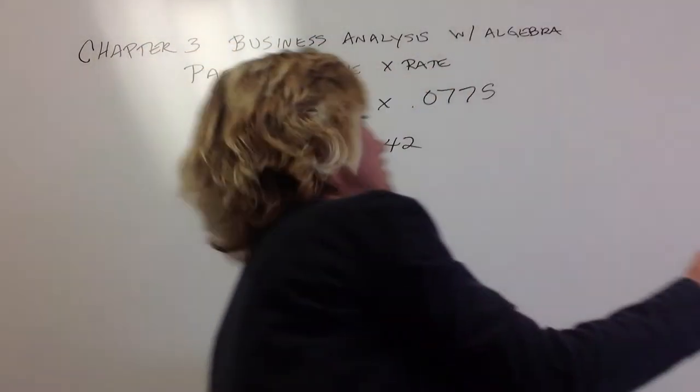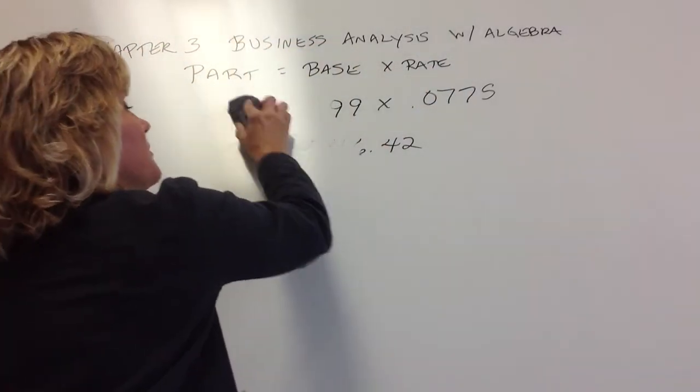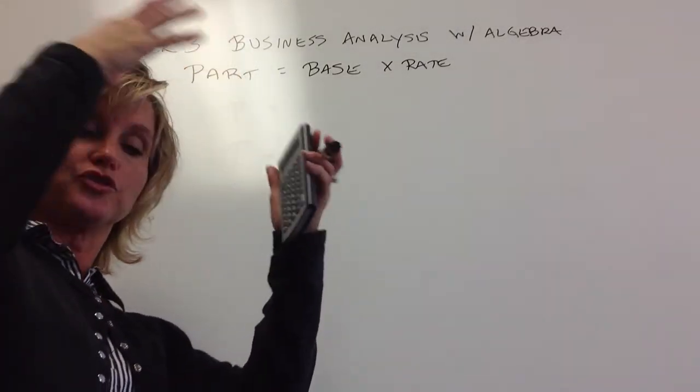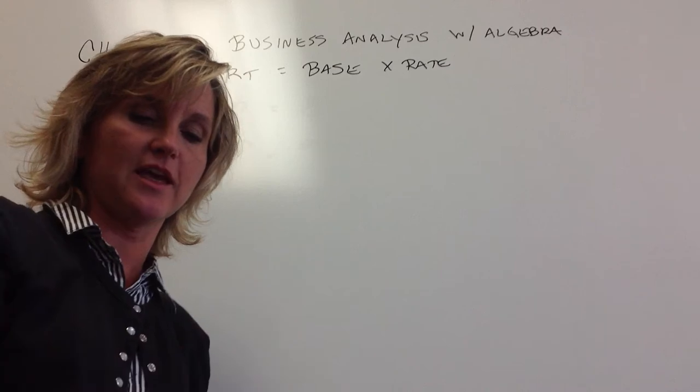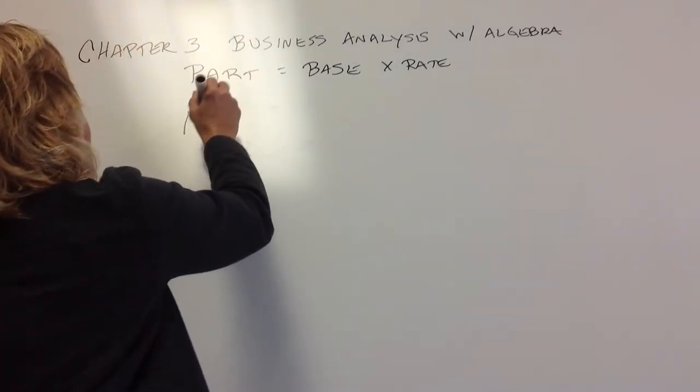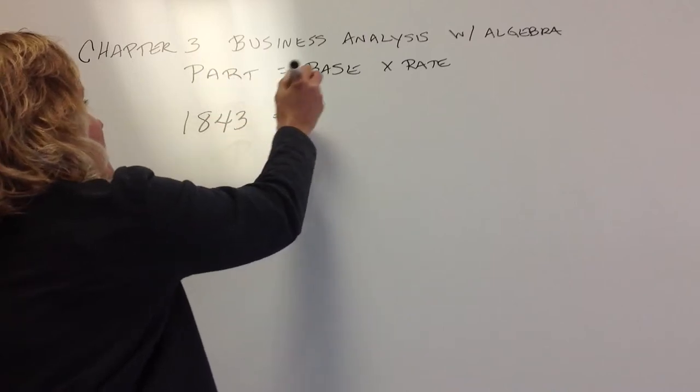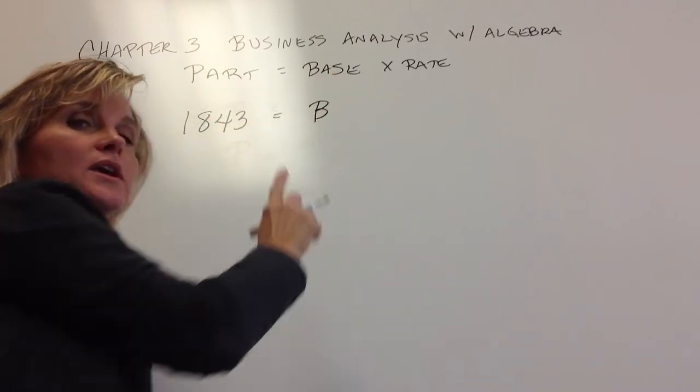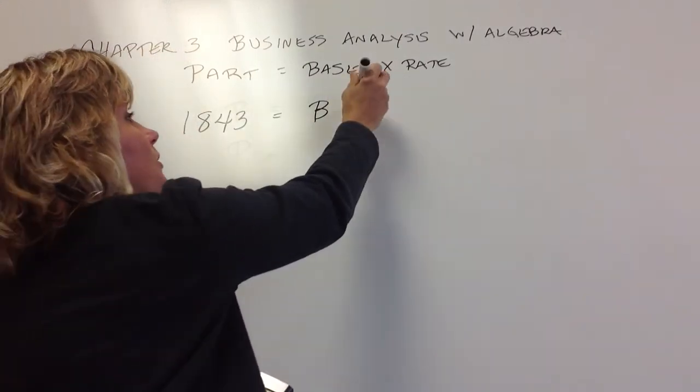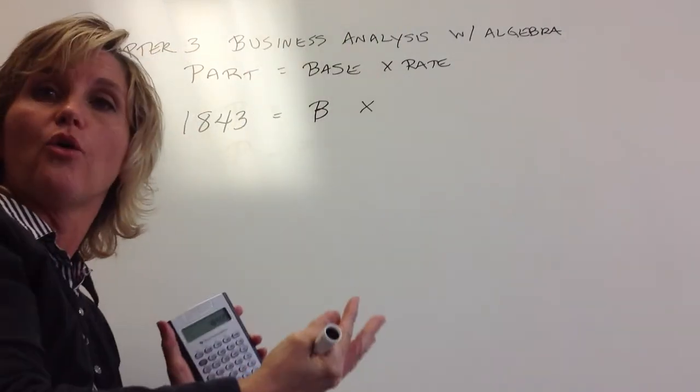So again, the number of students that they give us are not the total population. They're just the population that has more than $10,000 in student loans. So that number was 1,843 students. What we don't know is the total population of students, so that total population represents our base, or again, that whole pie.